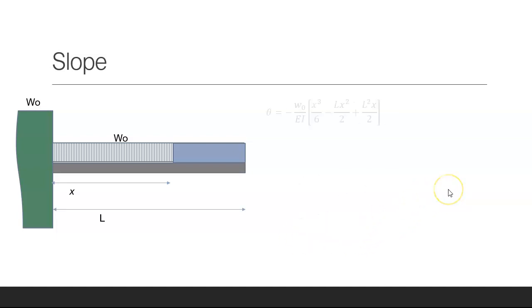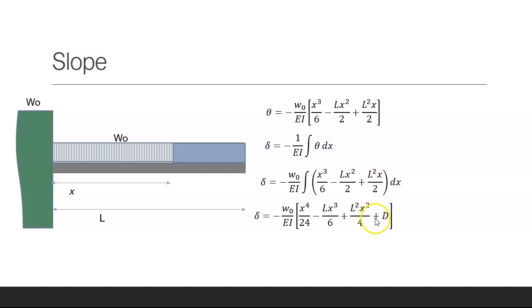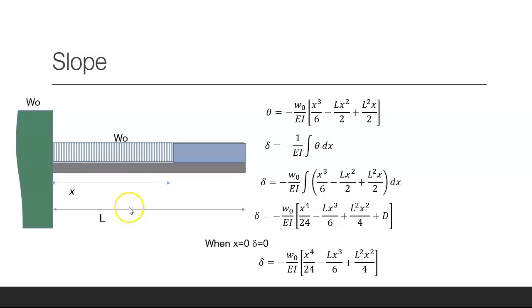Now we want the actual deflection. Integrating the slope equation, the integral of x cubed over 6 gives x to the 4 over 24, the integral of x squared over 2 gives x cubed over 6, and the integral of x gives x squared over 4 — plus a constant of integration D. Since the deflection at x equals zero is zero, D equals zero.